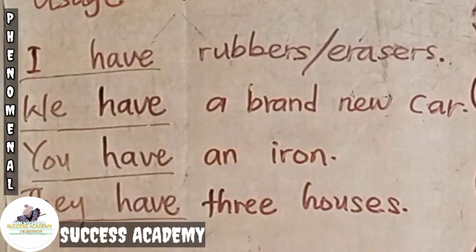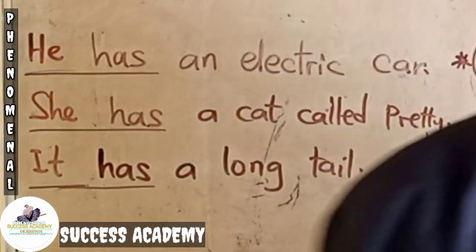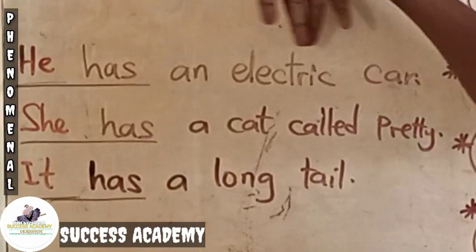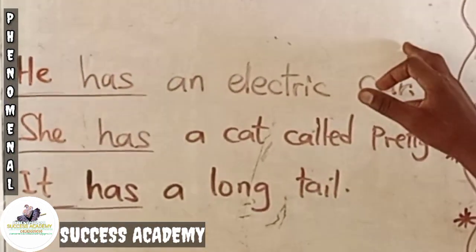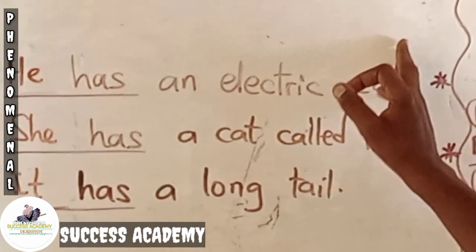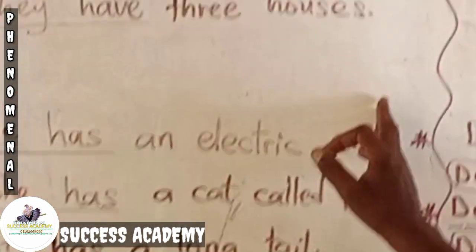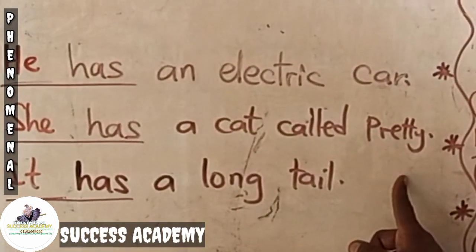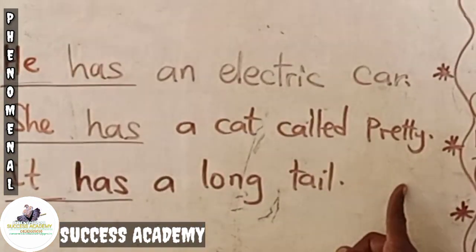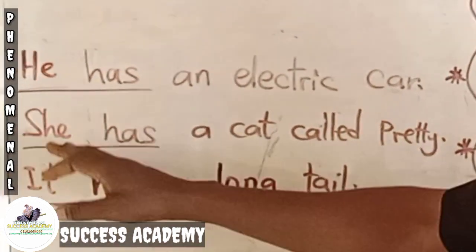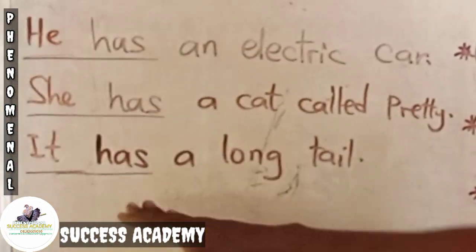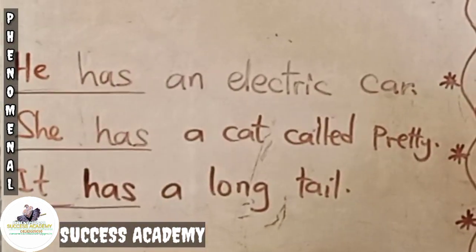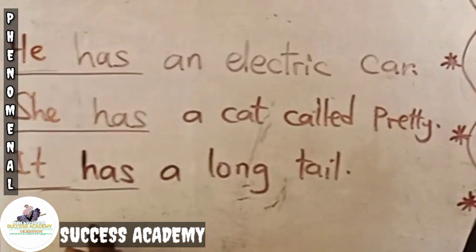If you say 'I has rubbers,' that is wrong. Now moving to the other examples. He has an electric car — that is correct. You should not say 'he have an electric car.' Second example: She has a cat called Pretty. If you say 'she have,' the grammar is wrong. Last example: It has a long tail — correct. If you say 'it have a long tail,' that is wrong.